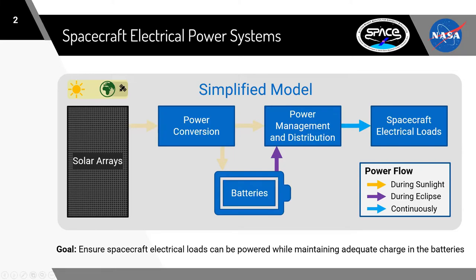I'm not sure how much everyone got before, but basically the spacecraft power system — the electrical loads are very important, because it's powering things like the life support system for the astronauts. The power management and distribution from the solar arrays to the batteries is a very important part of the whole spacecraft subsystem. We need the solar arrays during the day to recharge the batteries so that during the nighttime or the eclipse period, when the solar arrays are not seeing the sun, the batteries are able to provide continuous power to the spacecraft electrical loads.